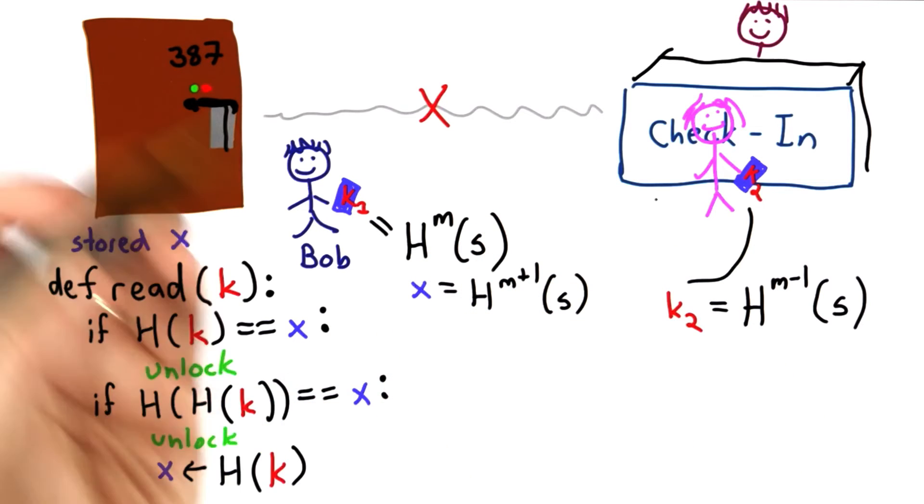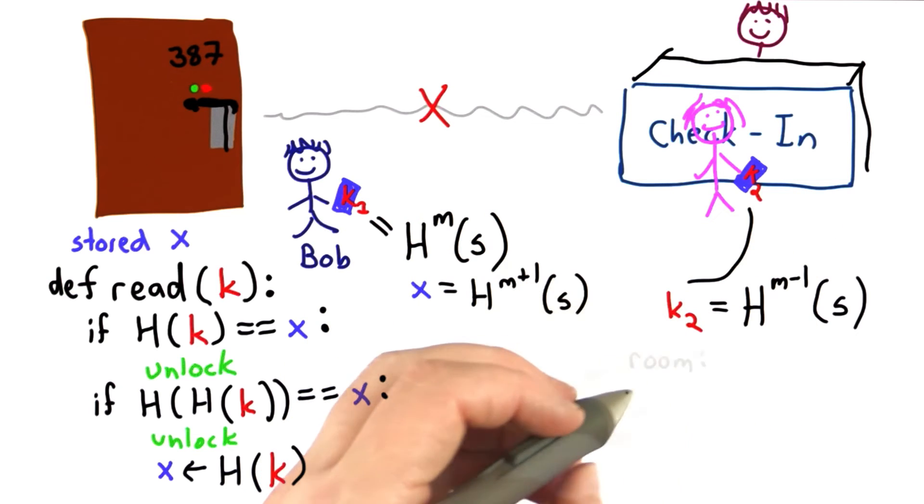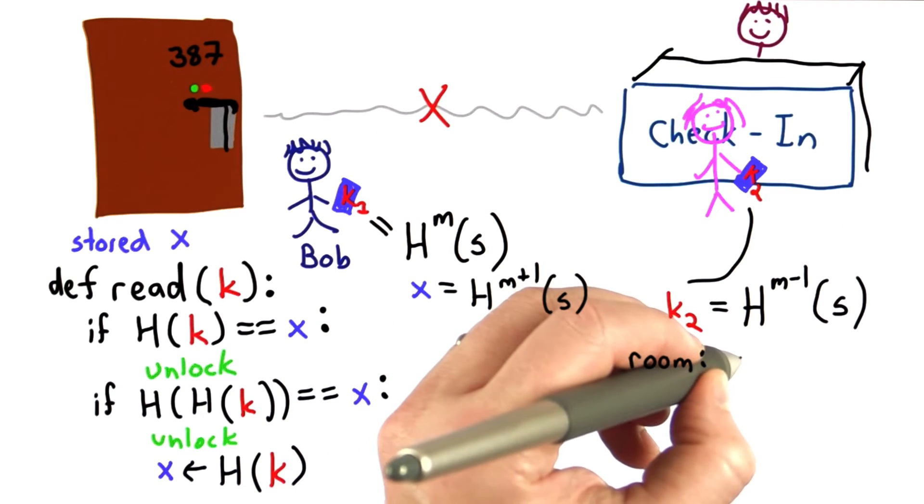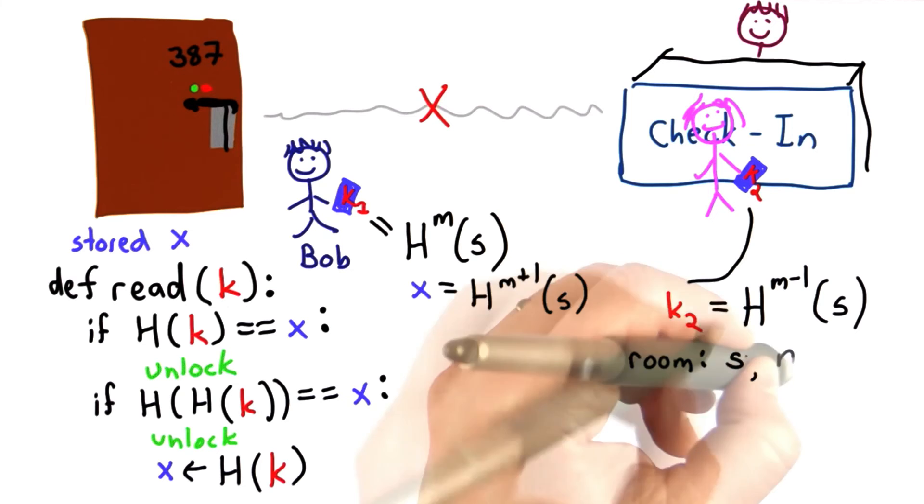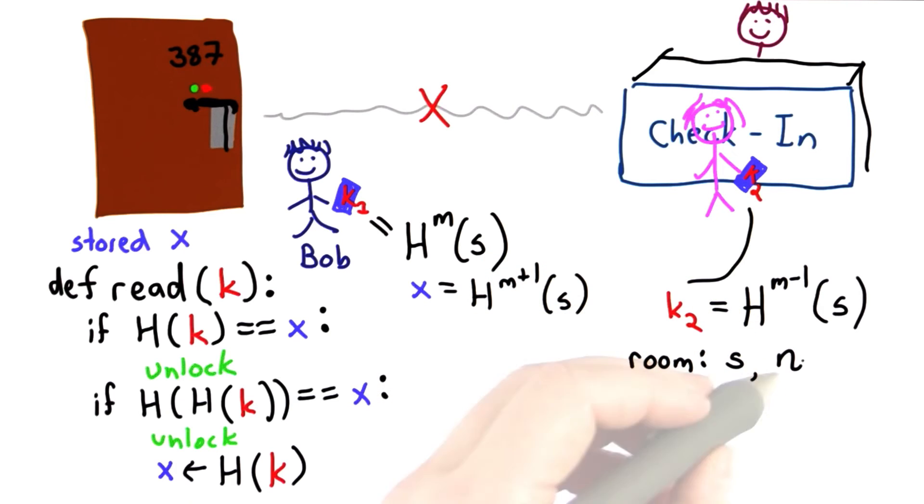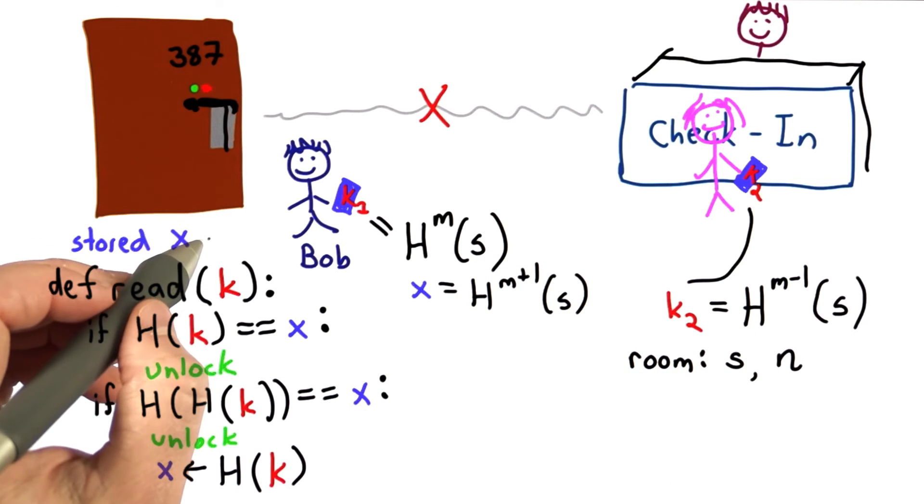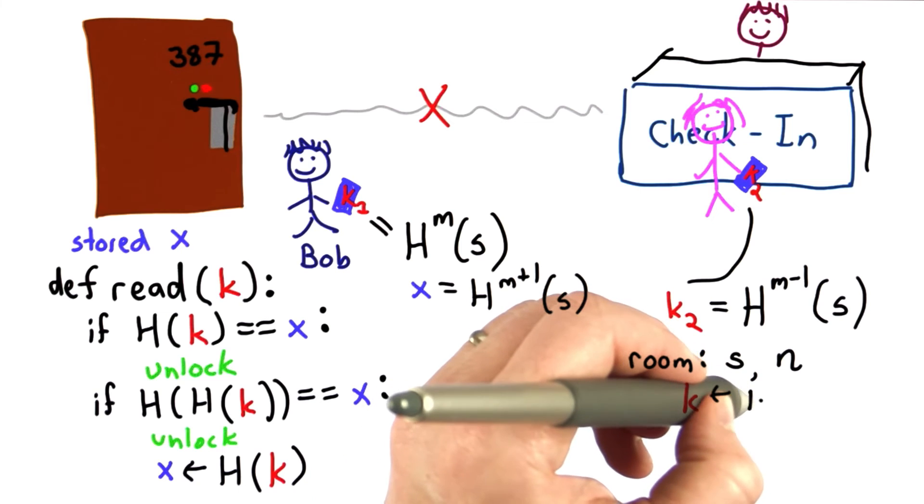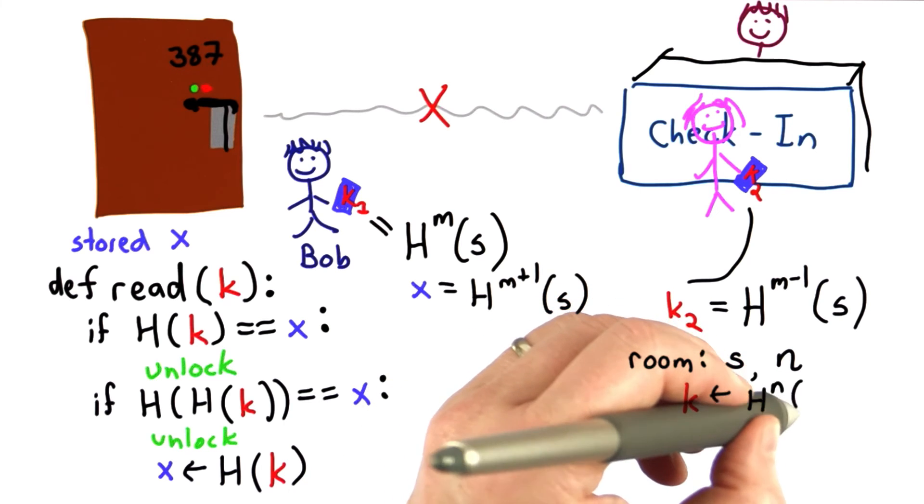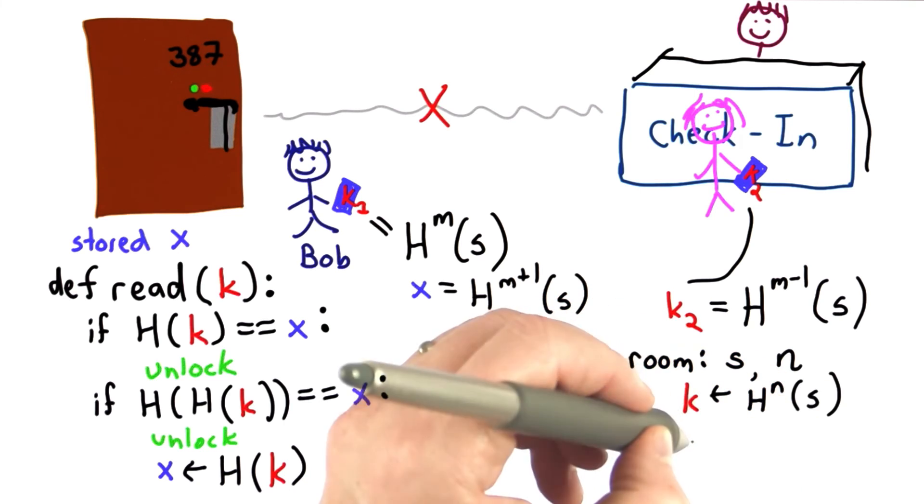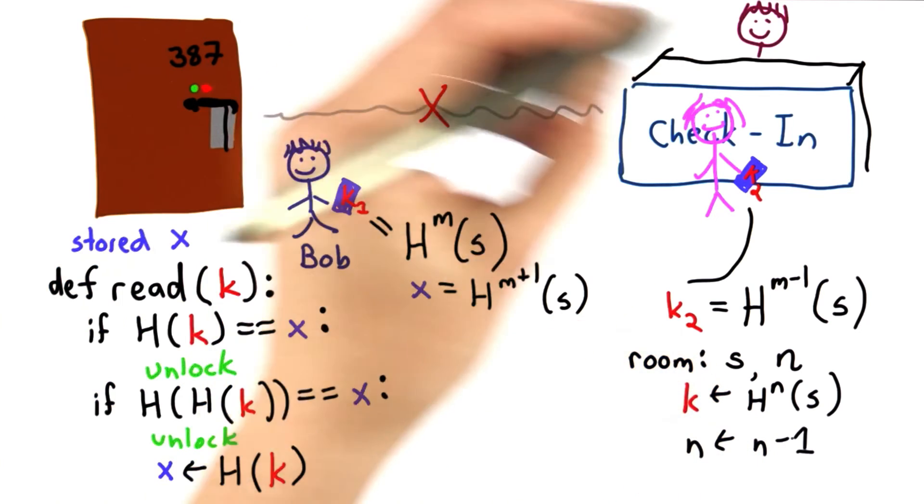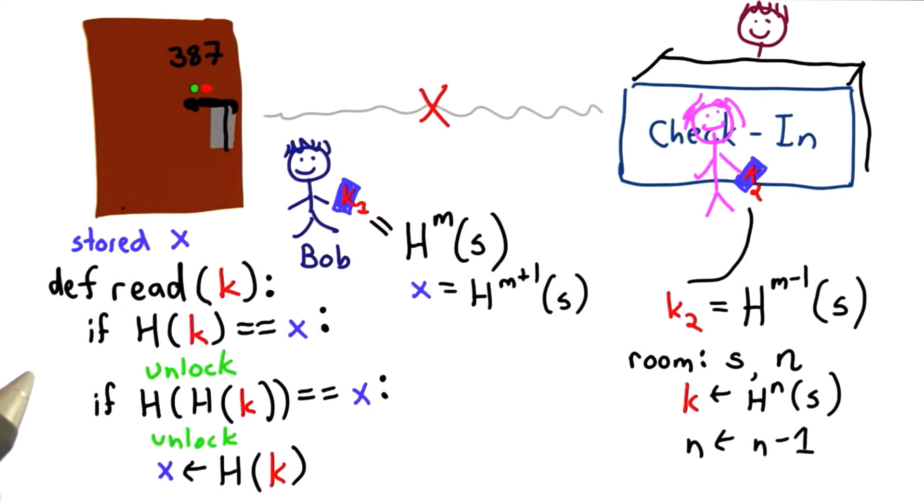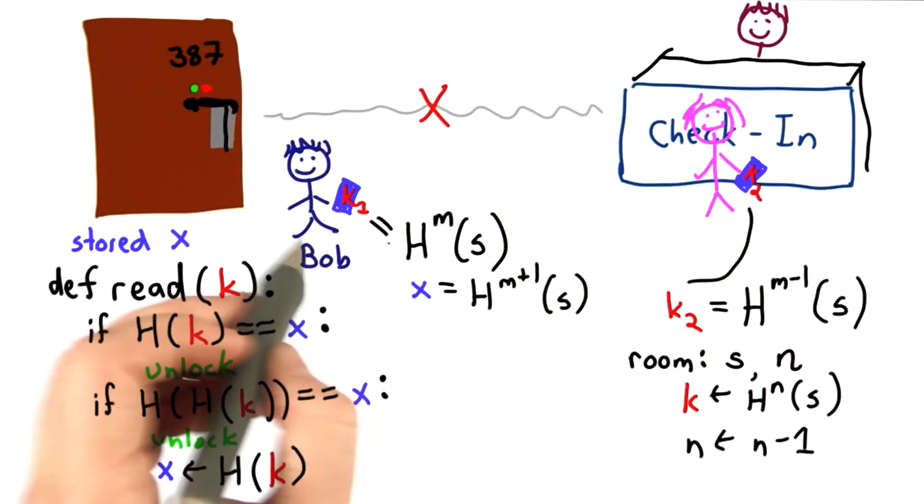So what the check-in desk needs to do, it needs to keep track of some secret, and it needs to keep track of the number of the guest. The initial value stored as x needs to be set, but once those are done, there's no coordination needed. Every time a new guest arrives, they'll be given a key, which is the result of hashing n times starting from s, and the value of n would be decreased by 1. So this is our design for allowing secure doors with a sequence of users.